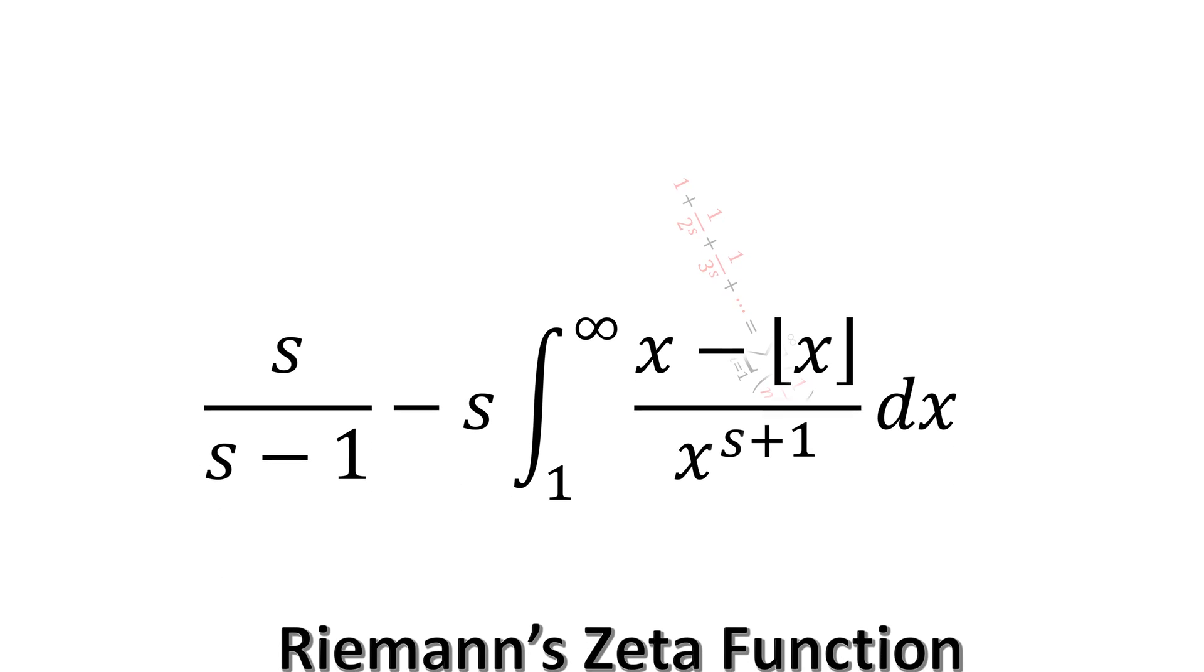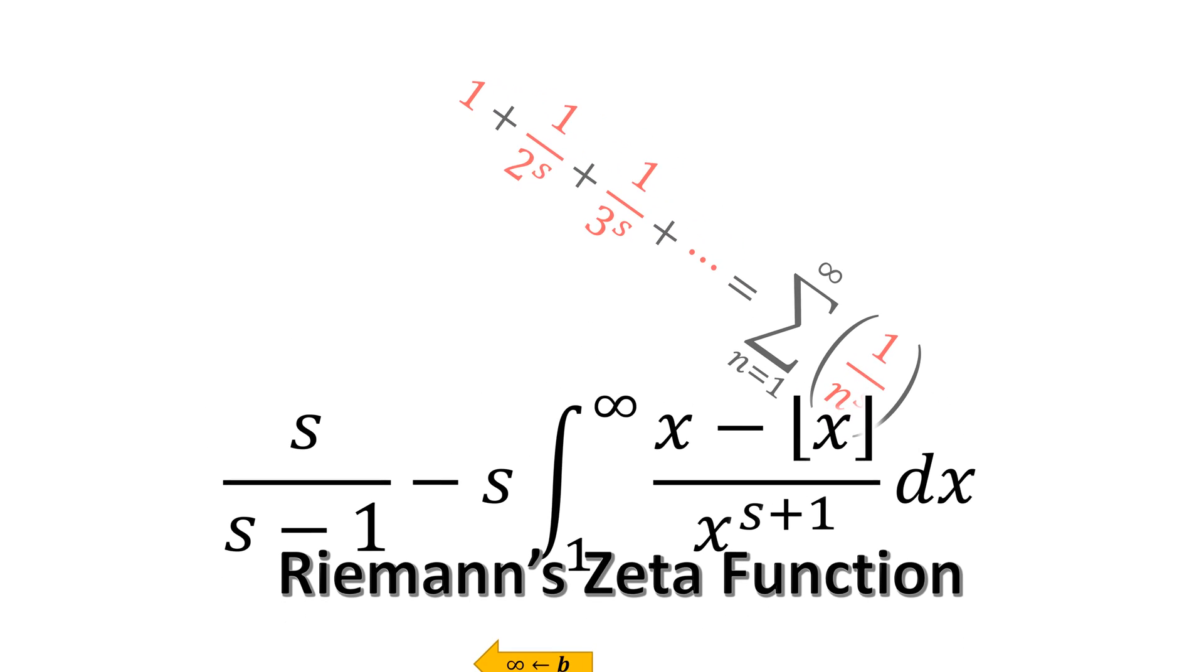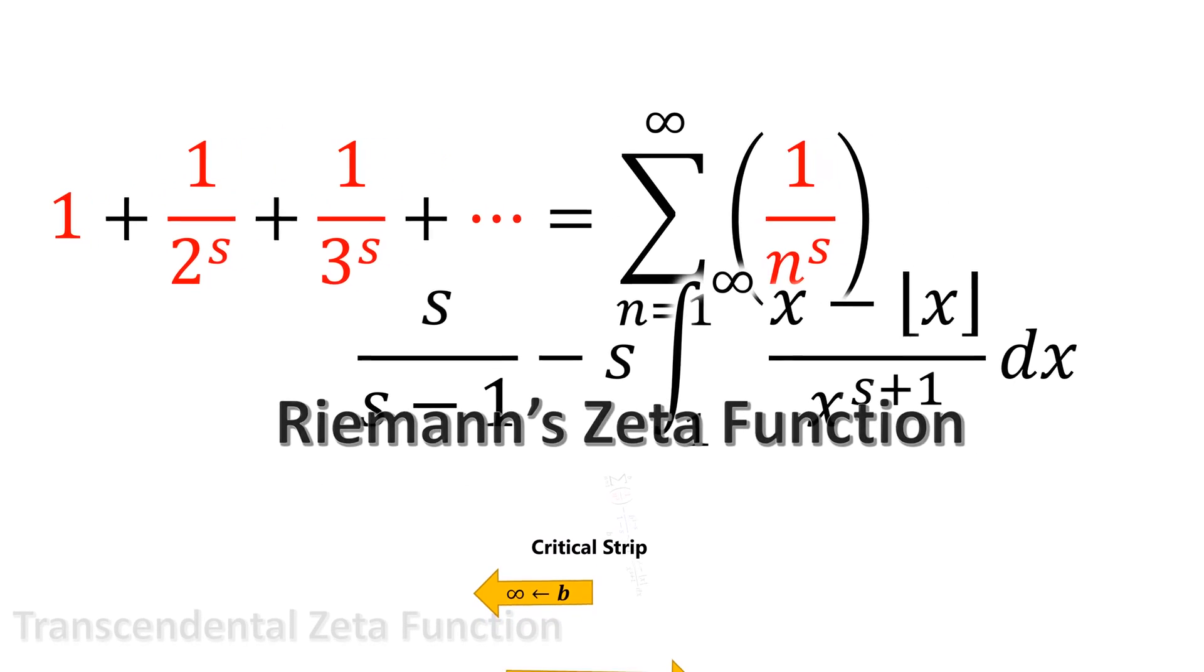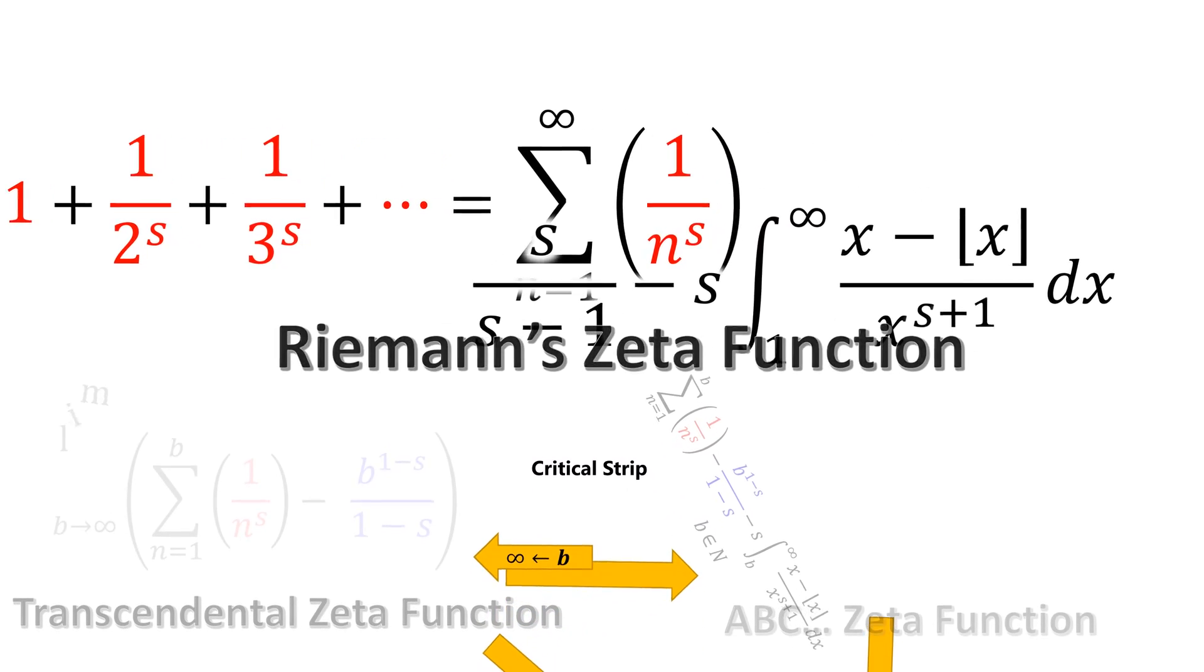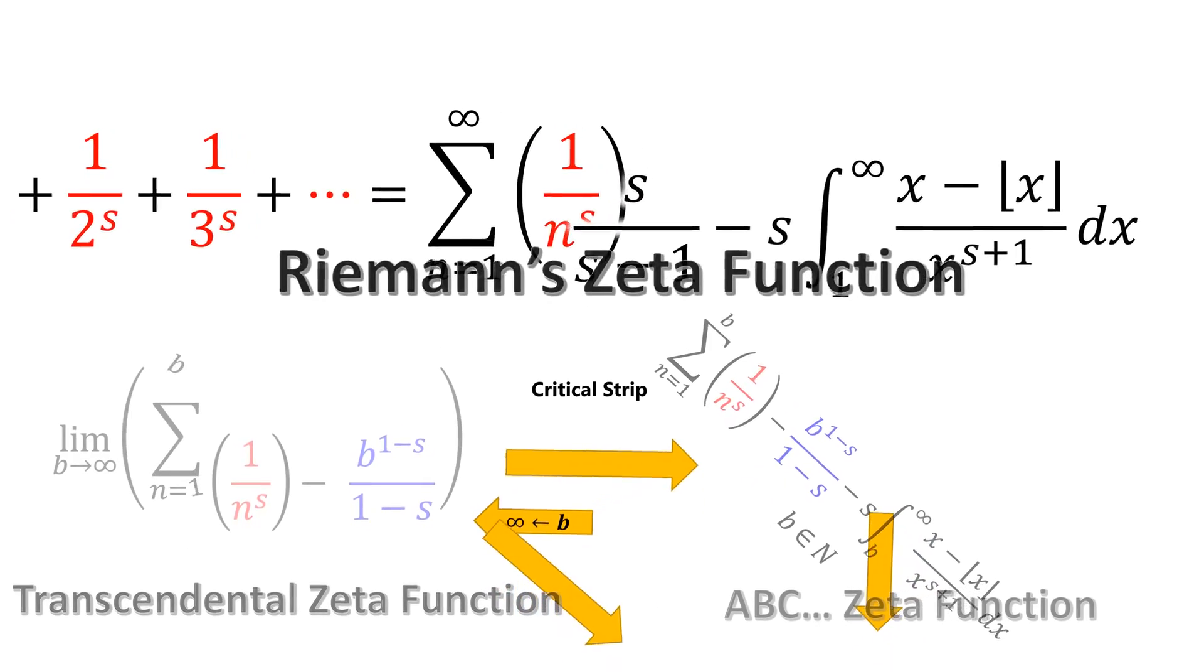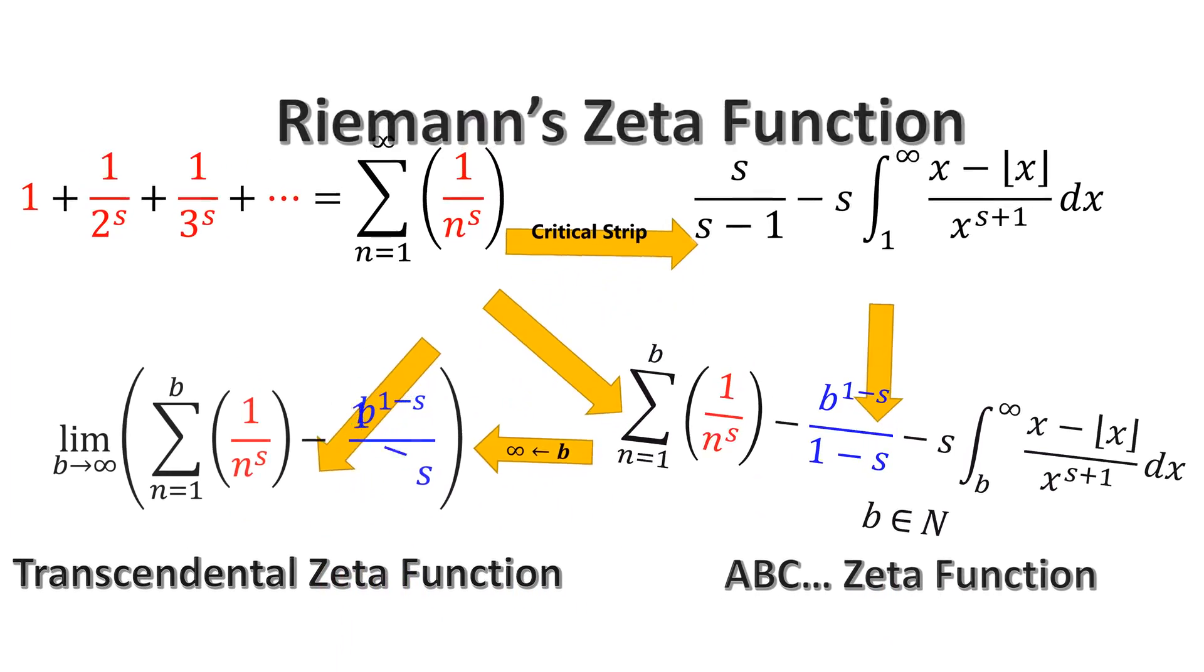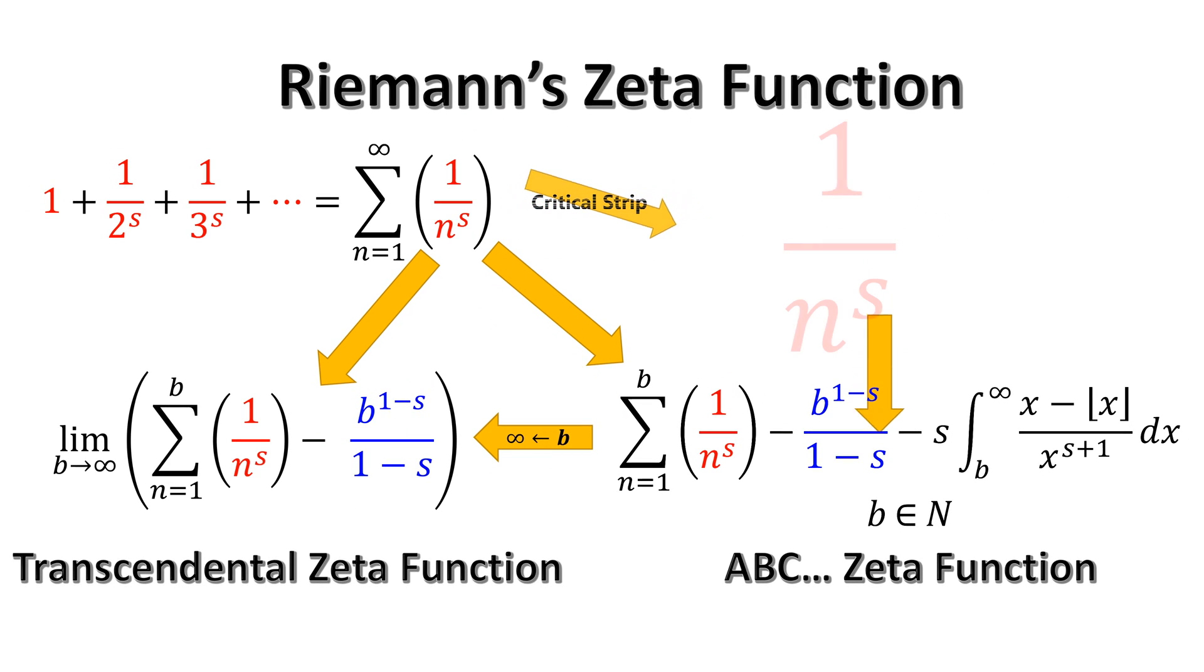In the next few minutes, we will see how to generate the last key needed to prove that Riemann's Hypothesis is correct. Please pay close attention to the term 1/n^s in these specific zeta functions.